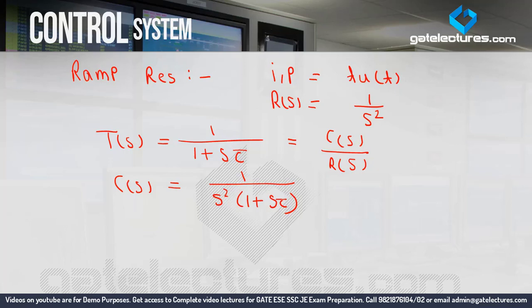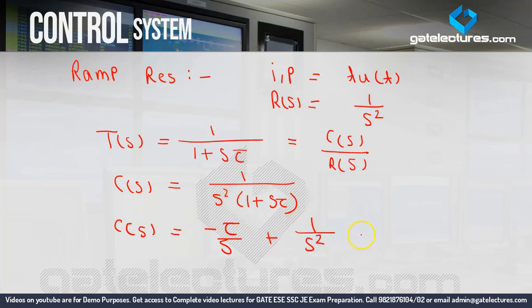Now we have to calculate C(T), the inverse Laplace transform of C(S). Before calculating the inverse Laplace transform, we need to perform partial fractions here. There is one S² term and one (1 + S·tau) term. You will try the partial fraction at home and post in the comment section if you have any doubt. The partial fraction result is: −tau/S + 1/S² + tau/(S + 1/tau).